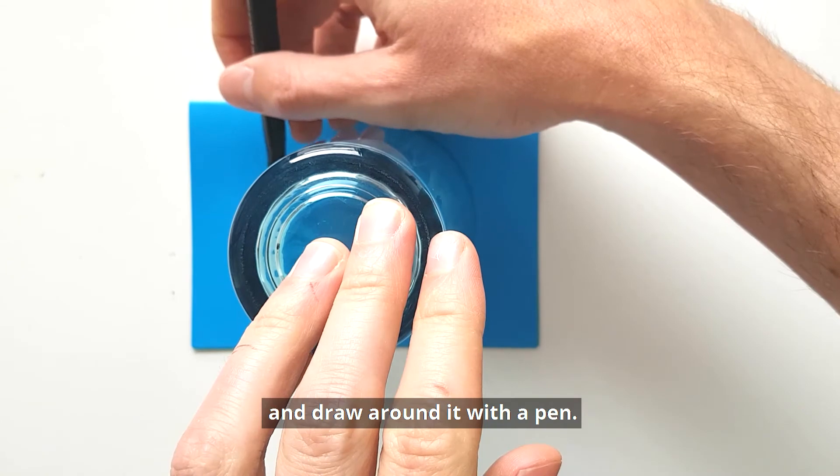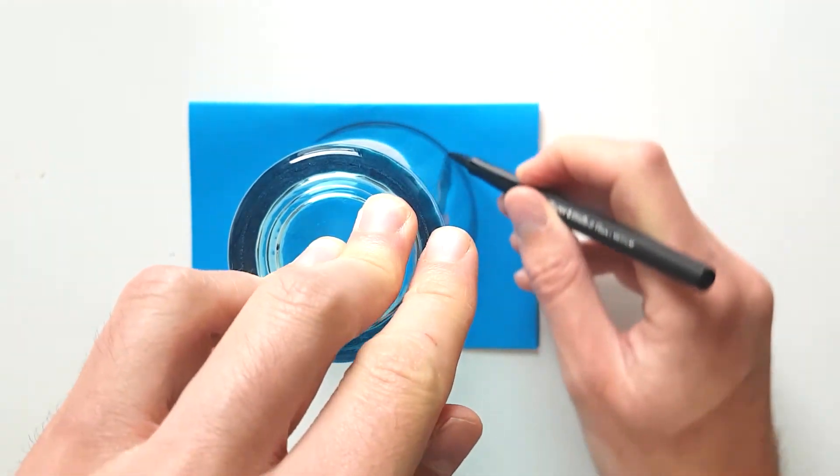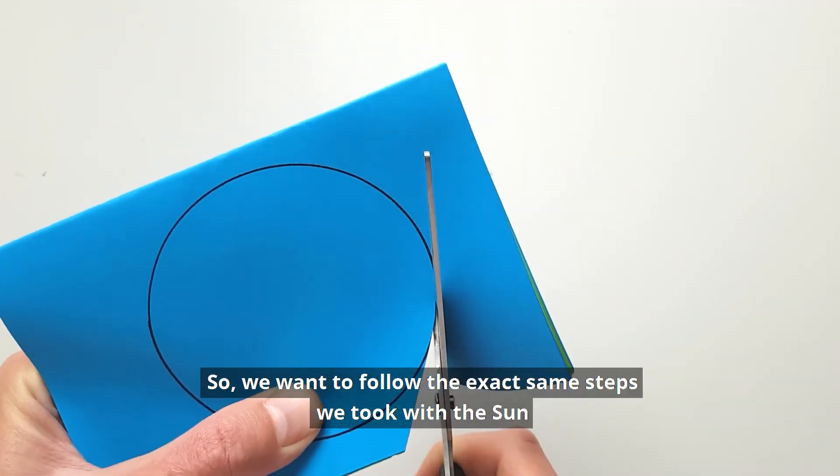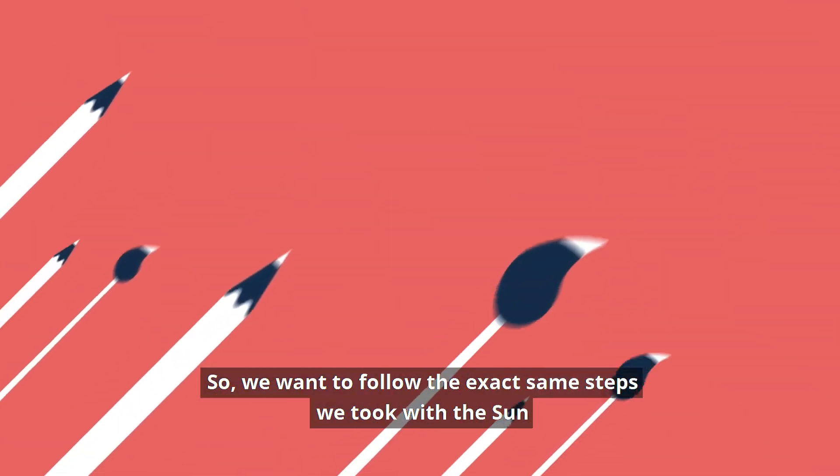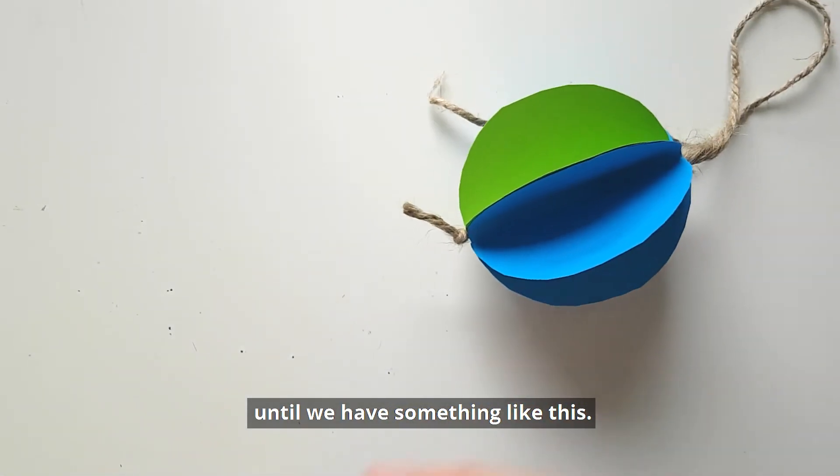Draw around it with a pen. We want to follow the exact same steps we took with the Sun until we have something like this.